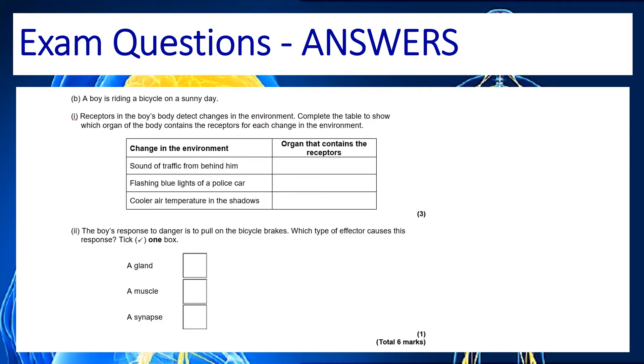Okay, so now we're identifying the organ that contains these receptors and in that case the sound is going to be detected by the ear. The blue lights will be detected by our eye and the cooler temperature will be detected on the surface of our skin.